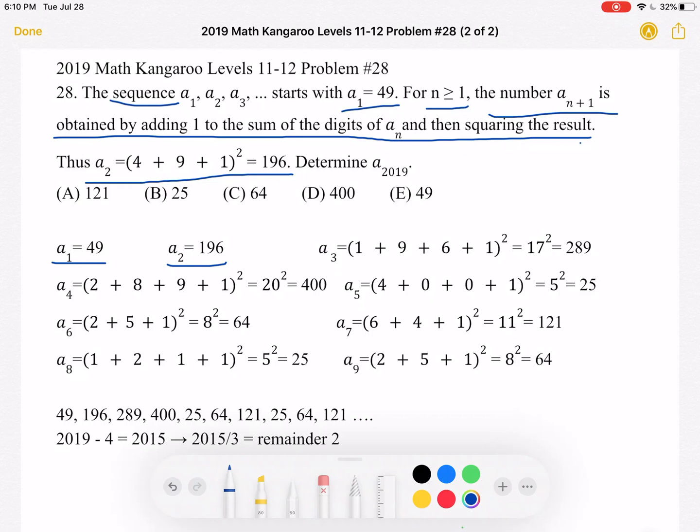Now we're going to again use the rule, the restriction they give us, and then we're going to find A3. By adding the digits of A2, so 1 plus 9 plus 6, and then adding a 1 as stated in the problem, and then squaring that quantity. This equals 17 squared, which equals 289.